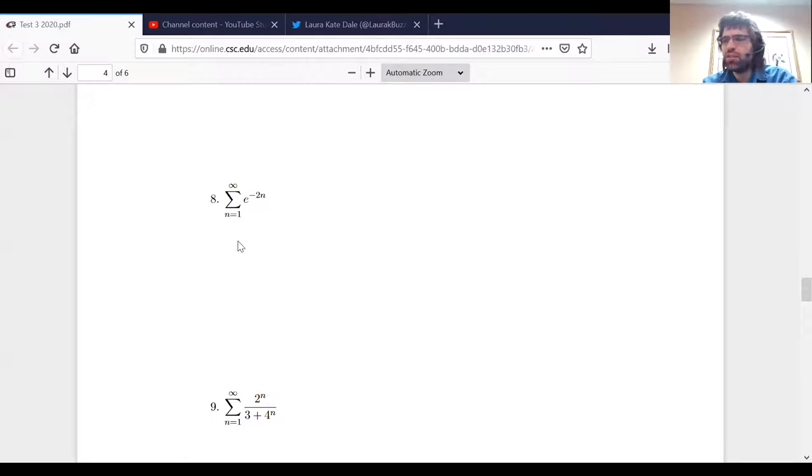Now, eight is another one of those things that's straightforward once you get to the right test, but it might not be immediately obvious what test to use. However, when I look at eight and I look at this sum, what I think is that e to the negative 2n should be easy to integrate. And if we can integrate this, then we can use the integral test.